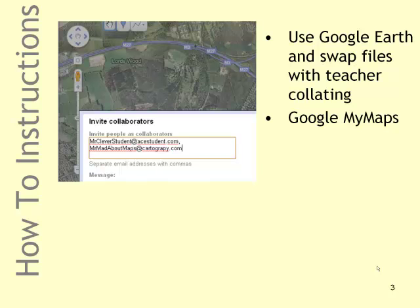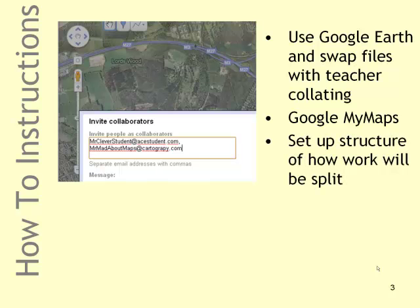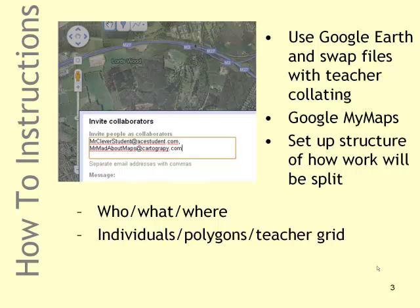Basically, you have to decide what teaching activity you're going to do, and set up the structure of how the work will be split up. You need to answer the question of who's going to be doing what and where. In my case study, I got individual students to digitize polygons; I produced a grid and told them exactly where they'd work. You could also split students into groups and get them to define the grid — that would make the activity longer but a more interesting learning experience.